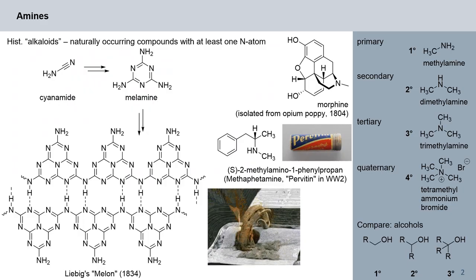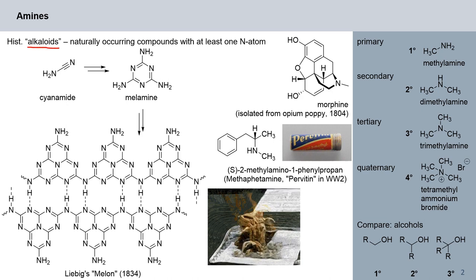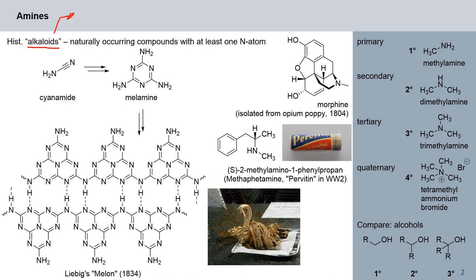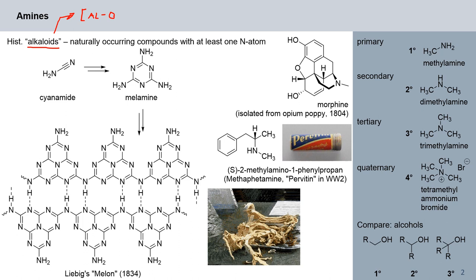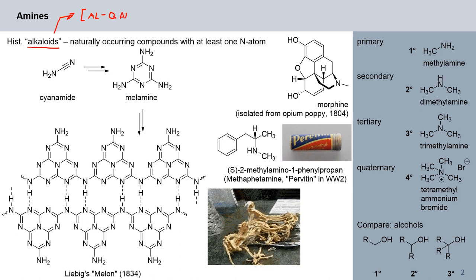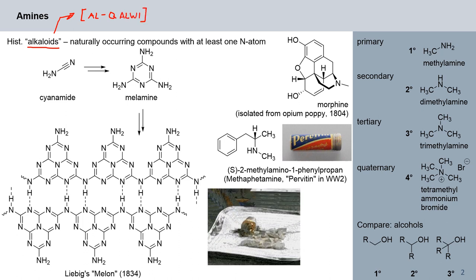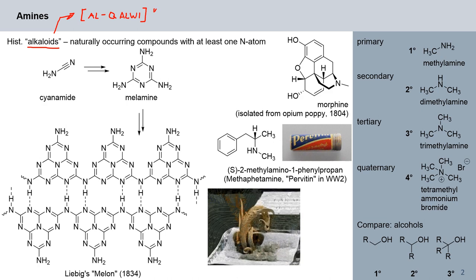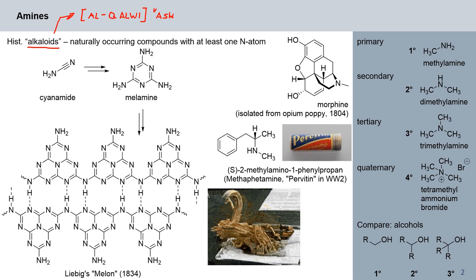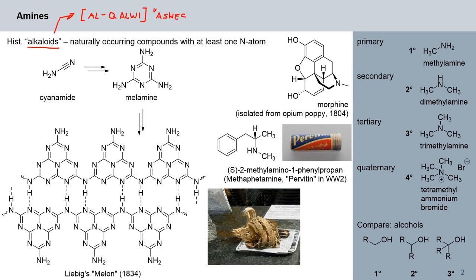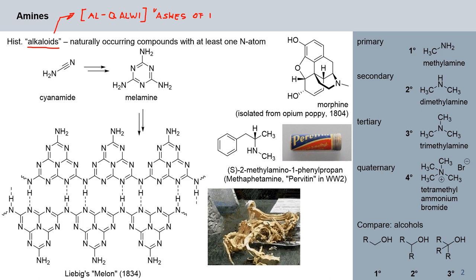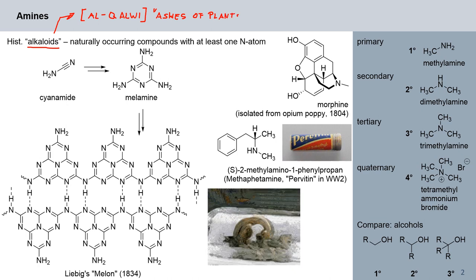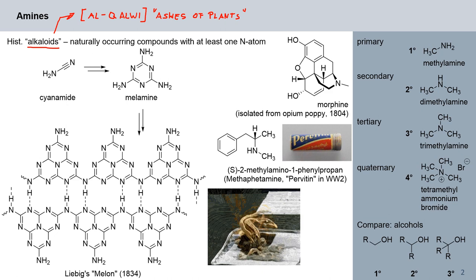Historically, amines were referred to as alkaloids. This name comes from Arabic — 'alkali', which apparently translates to 'ashes of plants'. It was realized very early on that if you combust plant matter in the presence of some salts, you essentially get a residue which reacts basic or alkaline. This is where the name comes from.